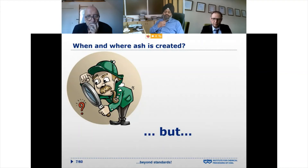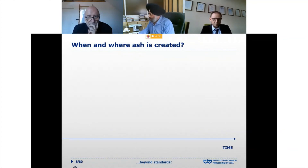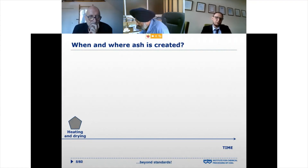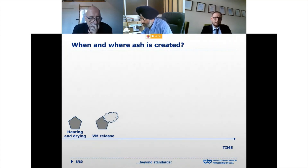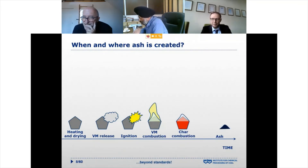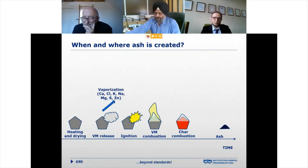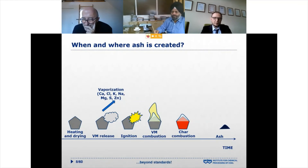As I will present now — and you already know from the previous webinars, so let me remind you with this slide — if we consider combustion of solid fuel, the first step is heating and drying of the fuel, the second is volatile matter release, next is ignition and combustion of volatiles, then char combustion, and finally we obtain the ash. However, ash can be created throughout the whole combustion process.